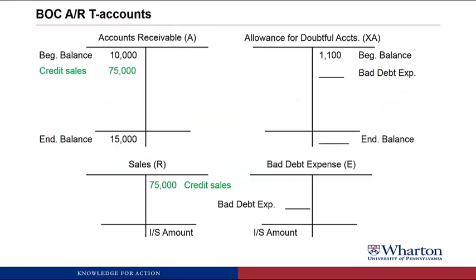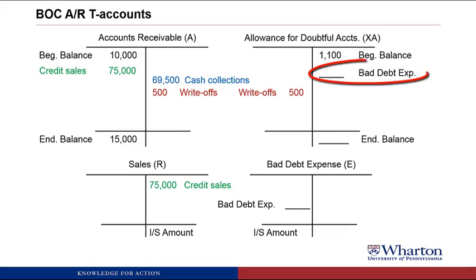Let's do an example implementing both methods for estimating uncollectible accounts using our example company, BOC. Here are their T accounts for a given quarter. They had credit sales of $75,000, which increased their receivables and sales. They collected $69,500 in cash on those accounts receivables — a reduction of accounts receivable and an increase to cash. During the quarter, they had write-offs of $500, reducing accounts receivable and the allowance for doubtful accounts. What's missing is the bad debt expense during the quarter and the ending balance in allowance for doubtful accounts.